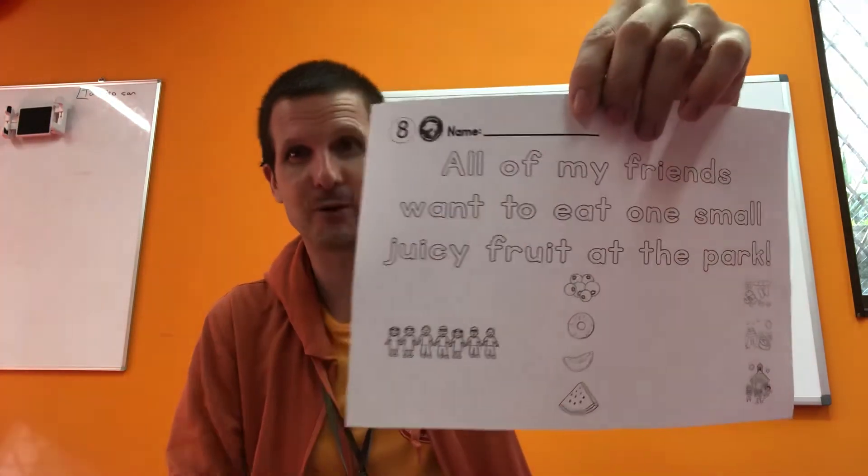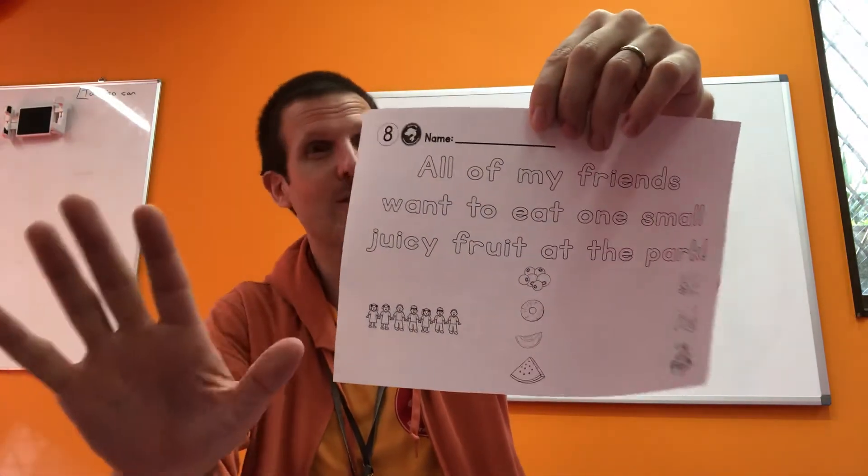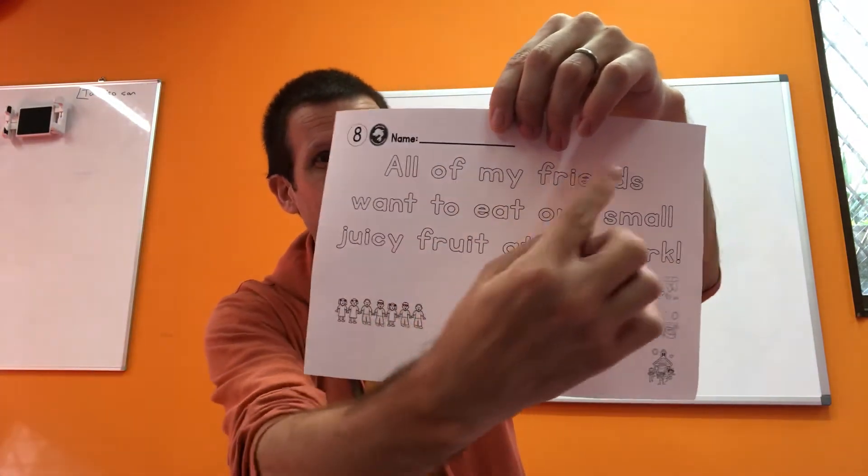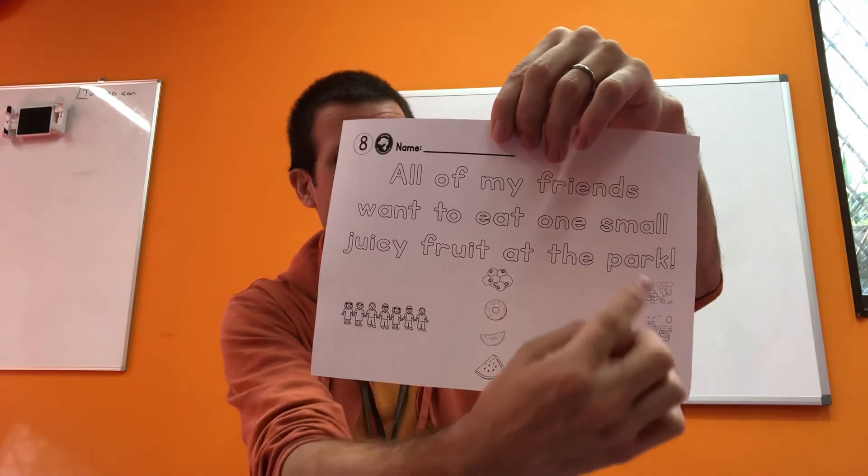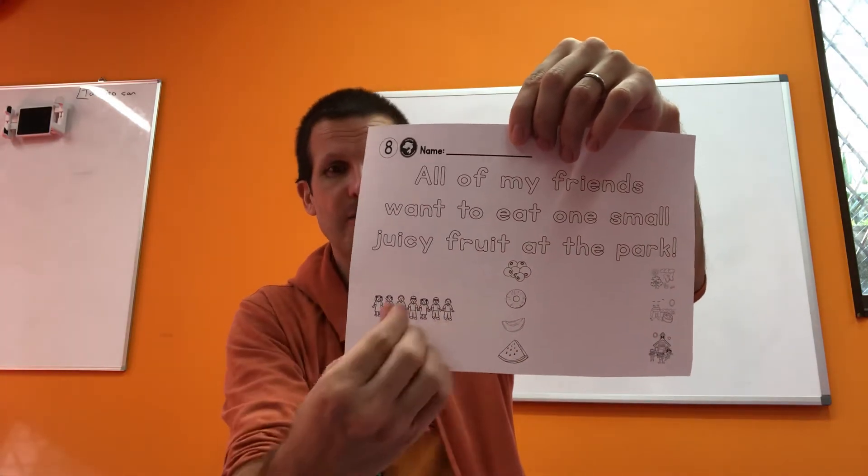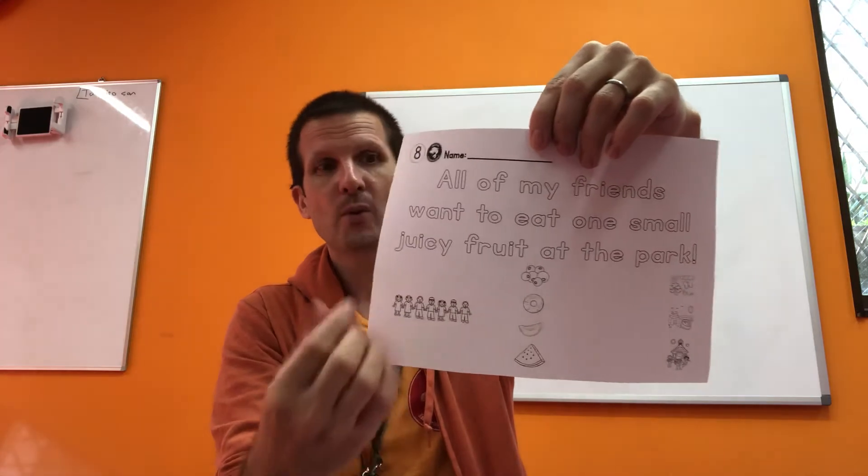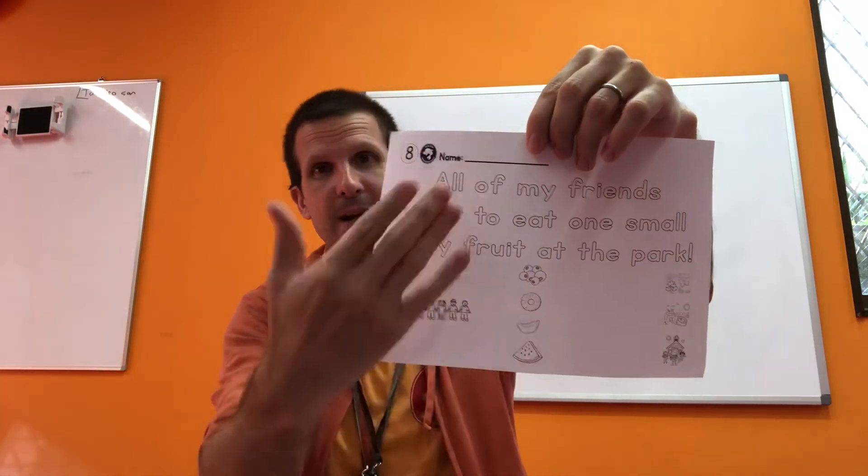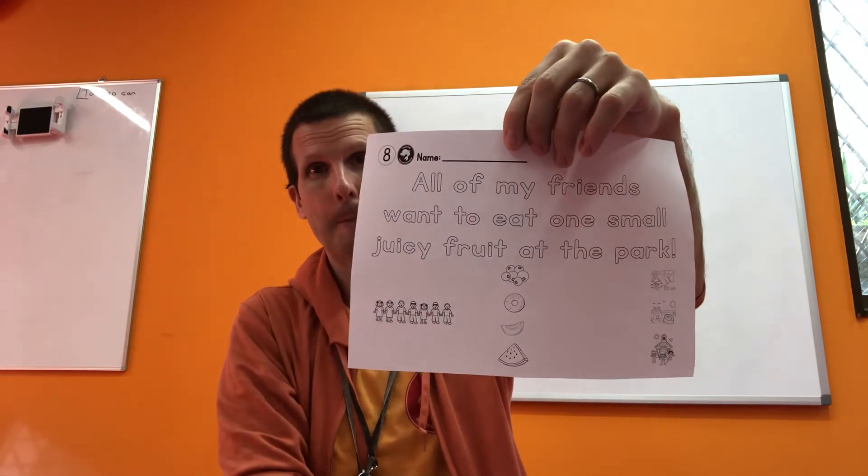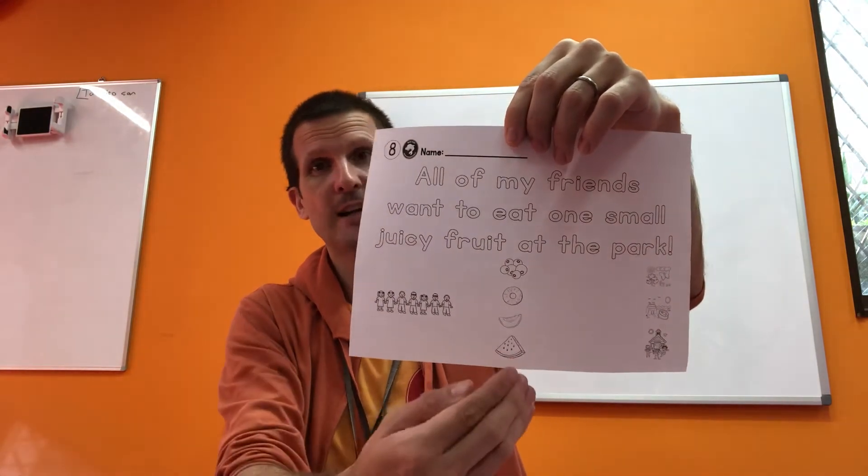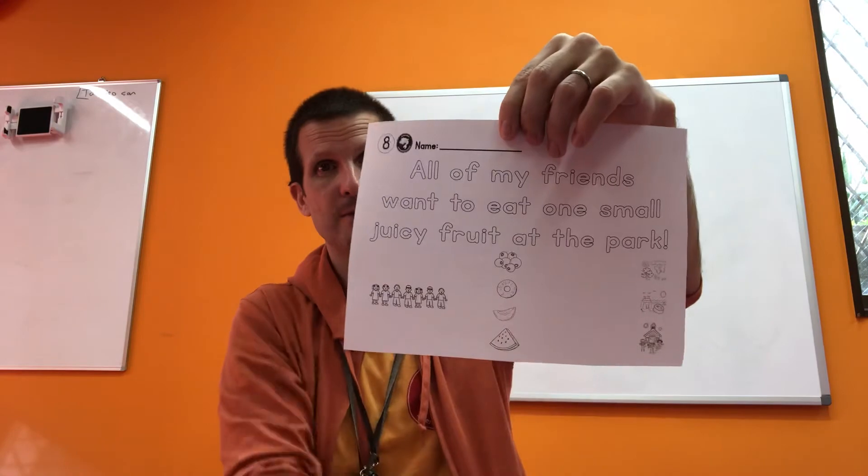Okay, number eight. Sorry about the fans running in here. It's blowing everything. Number eight, even harder still. All of my friends want to eat one small juicy fruit at the park. So, these are your friends. What fruit is... What fruit matches what they want? And where do they want to eat it? So, circle and color only the correct pictures.